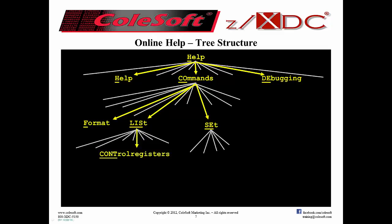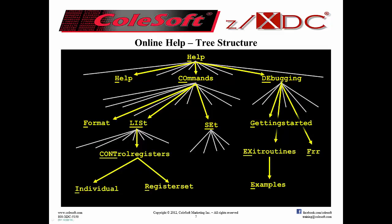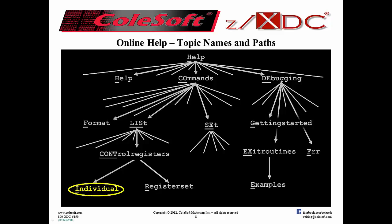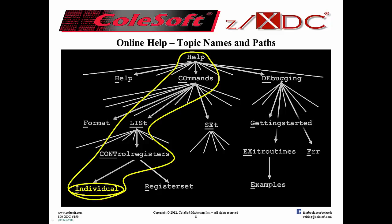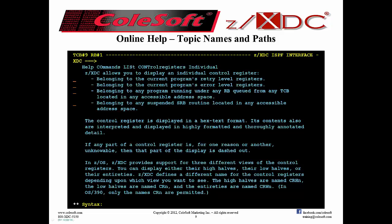The front page links to a dozen or two subtopics, subtopics link to sub-subtopics, and so forth. Now suppose I want to display a specific panel named 'individual' in the context of displaying control registers. To get to that panel, you have to give both its name and its path. So the complete help command would be 'help commands list control registers individual,' or abbreviated to just 'H CO LIS CONT I,' resulting in this. And here again is the full command for getting to this topic.